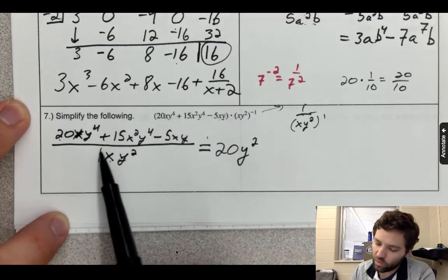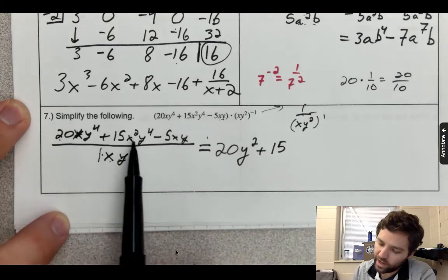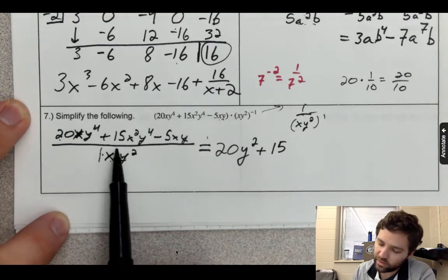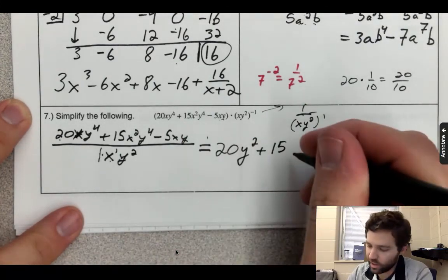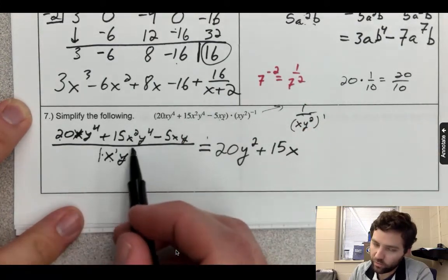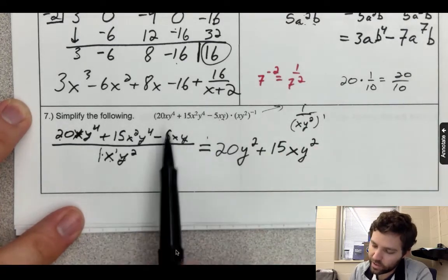Next one: 15 over 1, that's just 15. Plus 15. x² over x, that's x—remember, 2 minus 1 is 1, think of it like that. And then y⁴ over y², that's y². So plus 15xy².